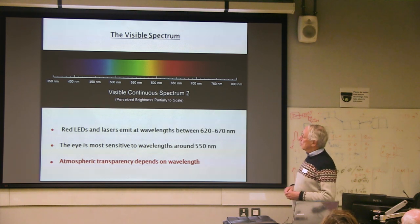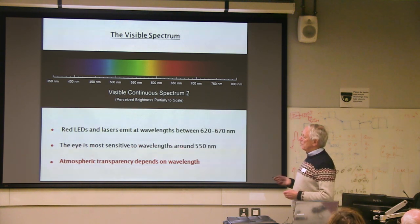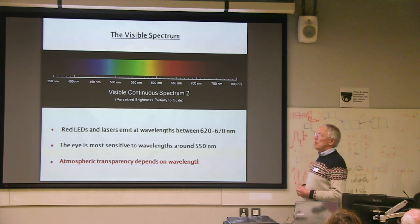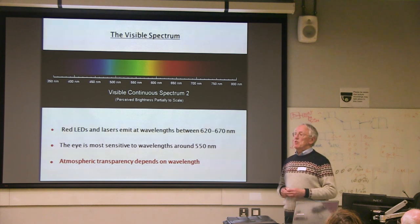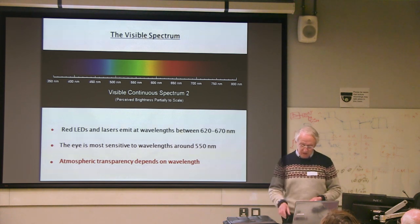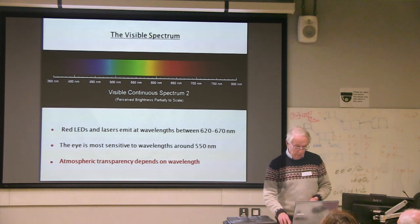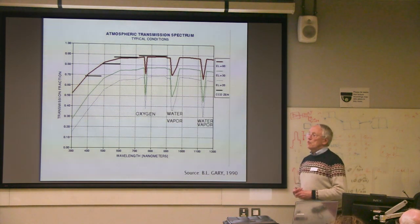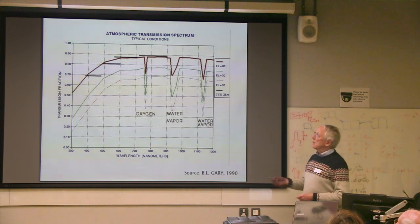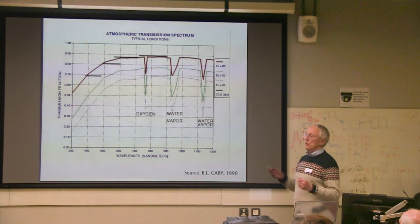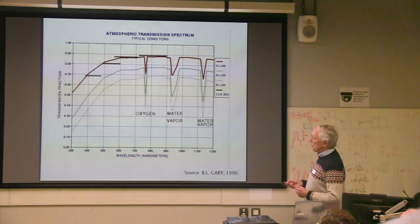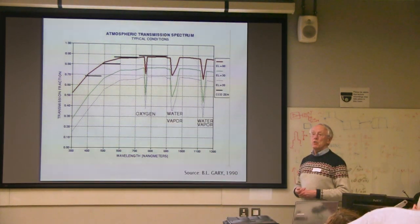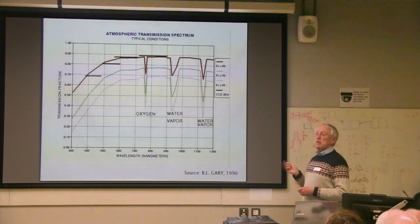You might ask why we use red light rather than green. It's partly because of the properties of the atmosphere — we have to take into account things like visibility, which isn't quite the same as microwaves. Here is a picture showing transmission coefficients through the atmosphere, from 0 to 100%, assuming no rain, cloud, or mist, plotted against wavelength.